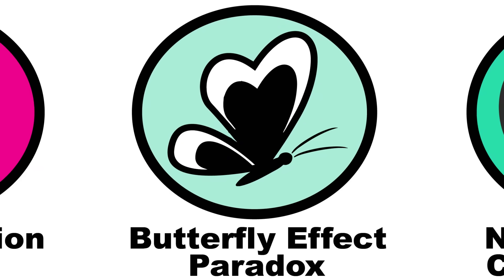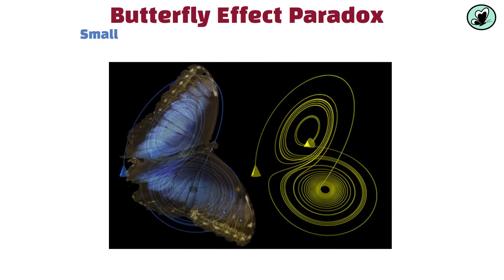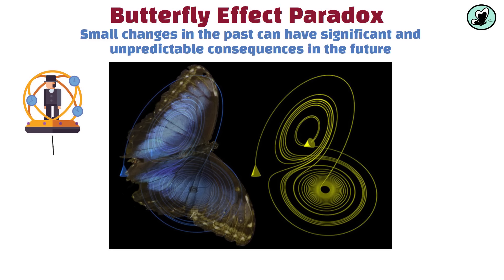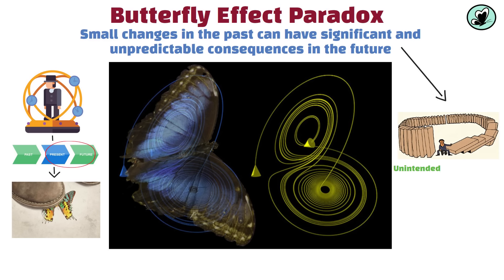The butterfly effect paradox is based on the idea that small changes in the past can have significant and unpredictable consequences in the future. A time traveler makes a seemingly insignificant change in the past, like stepping on a butterfly, which leads to drastic alterations in the present or future timeline. This paradox highlights the potential for unintended consequences in time travel.